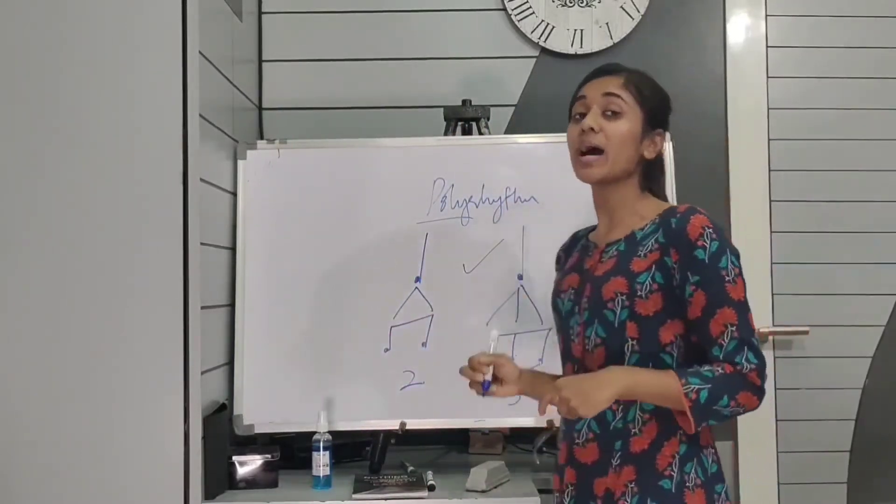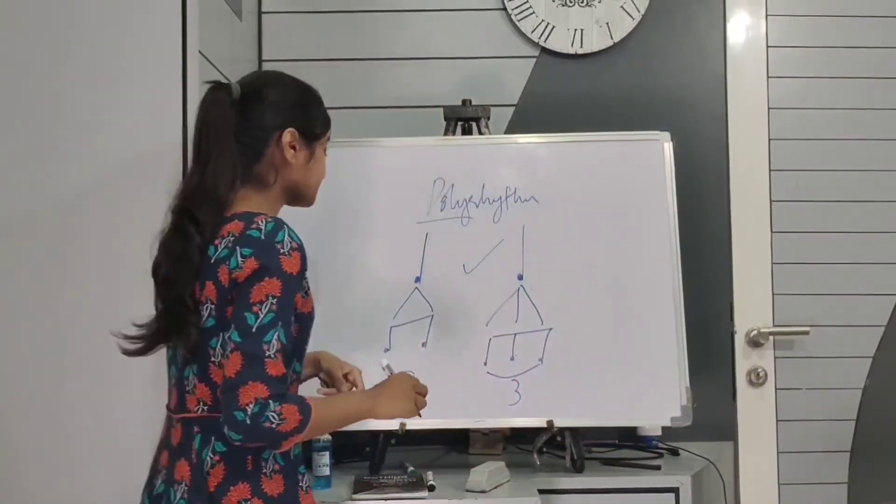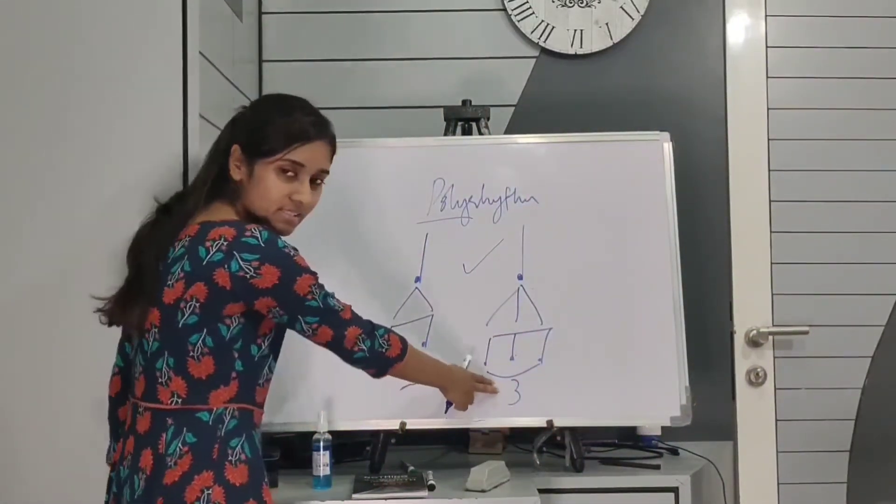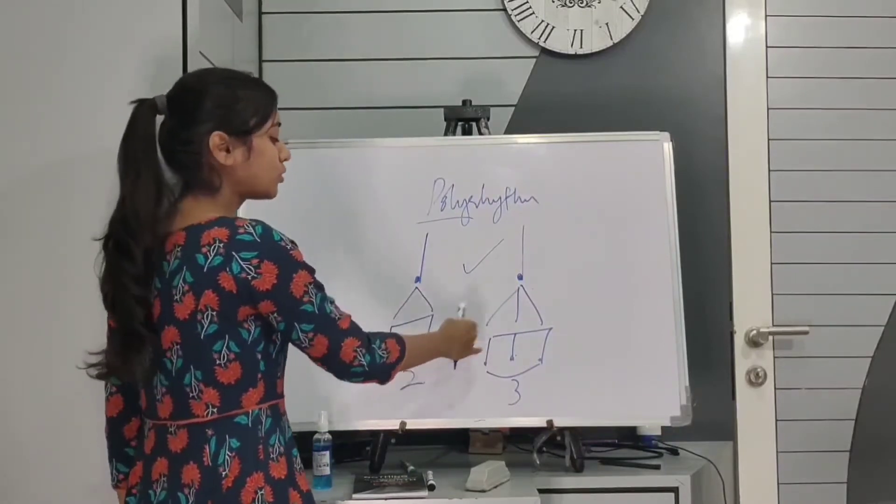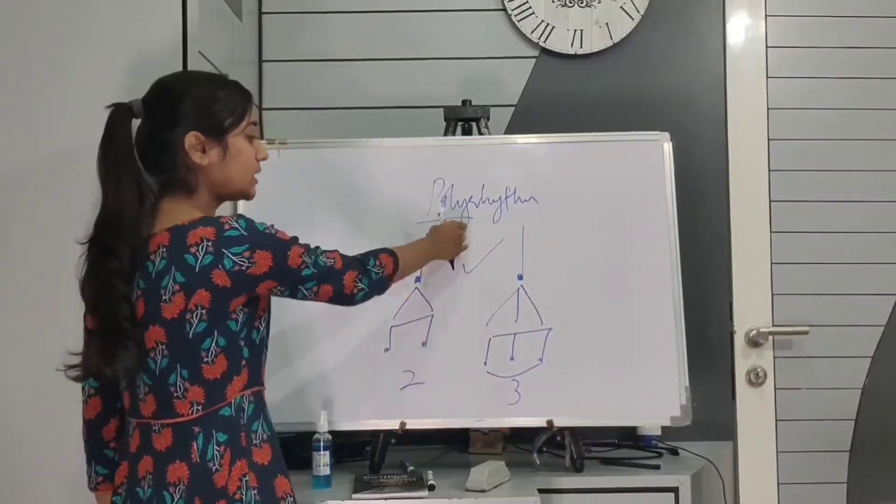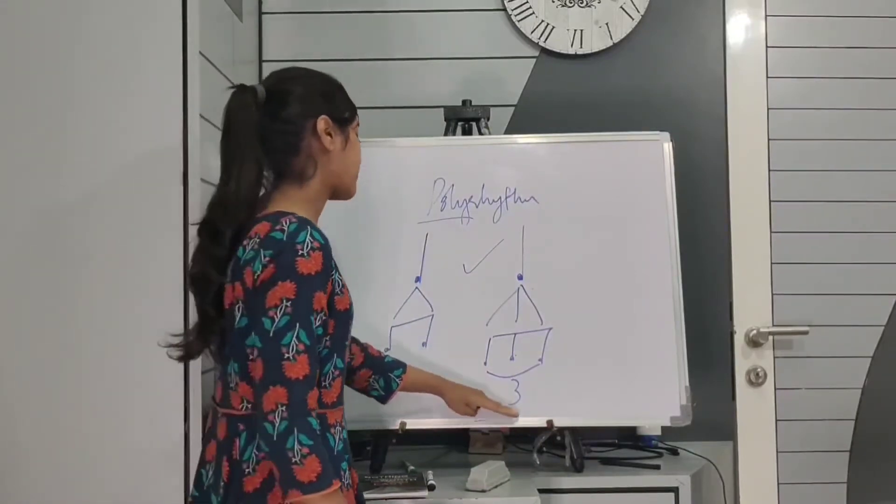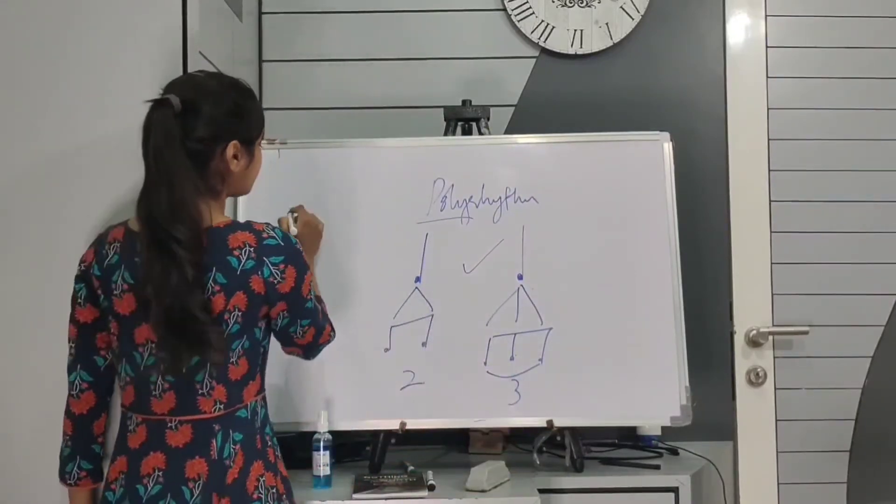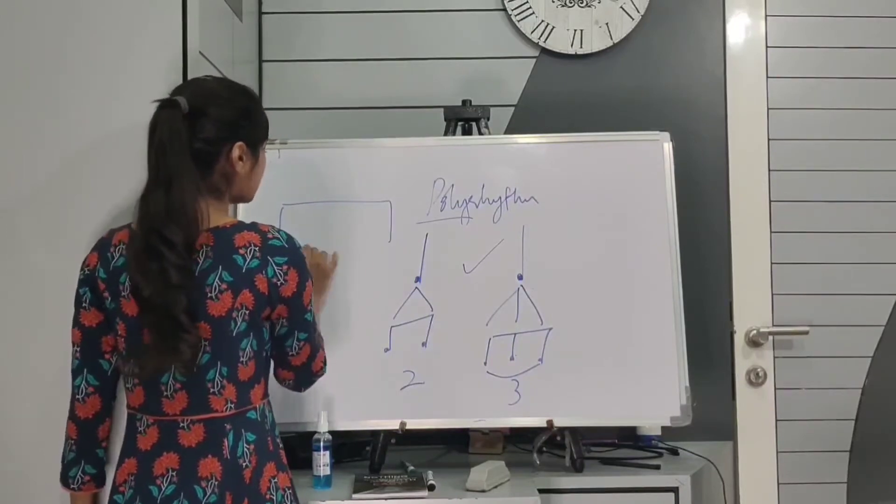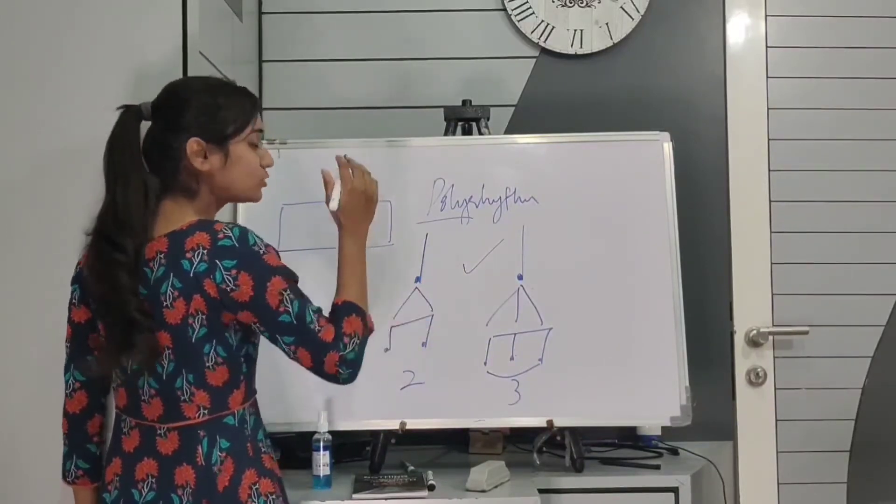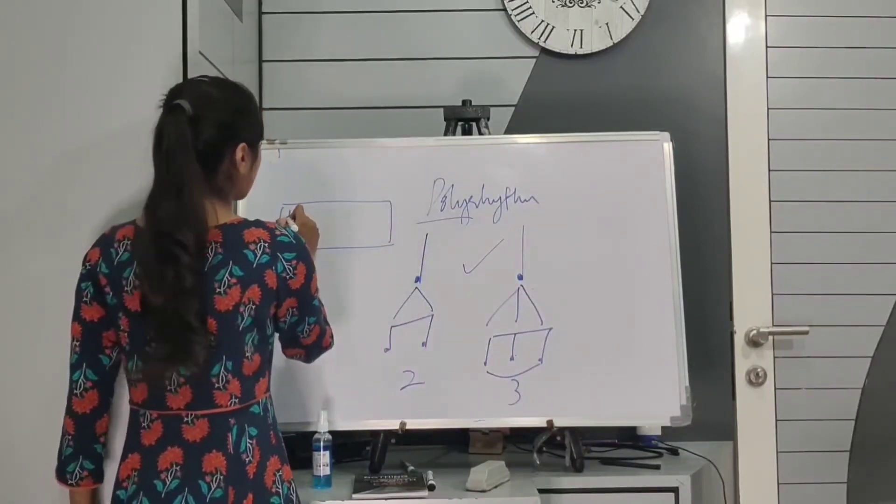Now we'll see how to actually play polyrhythm. So here we're going to take an example of two against three only. We are playing two notes against three notes in one beat. So first we'll take lowest common multiple of them, which is six here. And we're going to divide the one beat into six equal fragments.